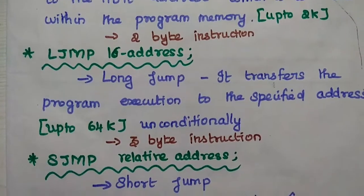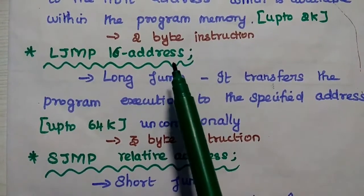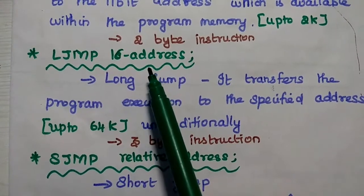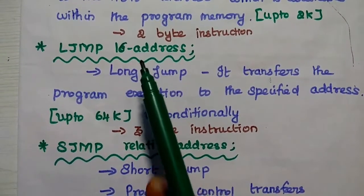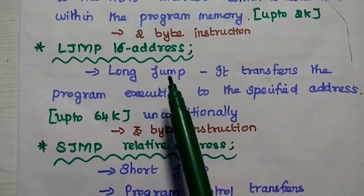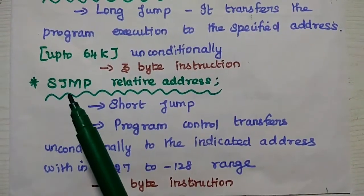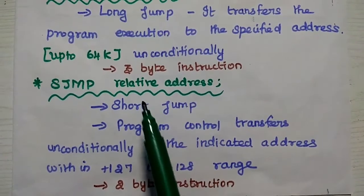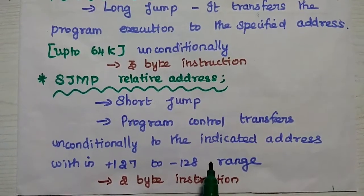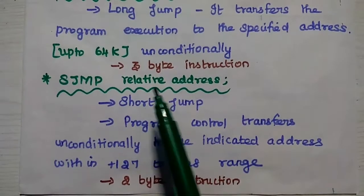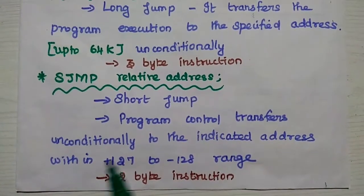The next instruction is long jump, represented as LJMP with a 16-bit address. It transfers program control to the given address anywhere within the range of 64000 memory locations. It is a 3-byte instruction: 16 bits equals 2 bytes plus 1 opcode byte. Short jump is represented as SJMP with a relative address. It transfers program control within the range of plus 127 to minus 128. It is a 2-byte instruction: 1 byte for the relative address and 1 byte for the opcode.